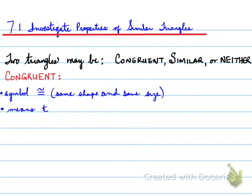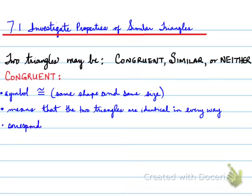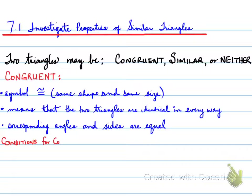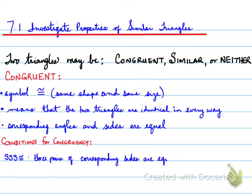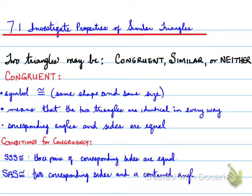When they have the same shape and same size, that means the two triangles are actually identical — identical in every way: same size, same shape. The corresponding angles and sides are all equal. Now, there are some conditions to prove congruency. The conditions for congruency are as follows: SSS congruency, which means three pairs of corresponding sides are equal; SAS congruency, which means two corresponding sides and a contained angle are equal.